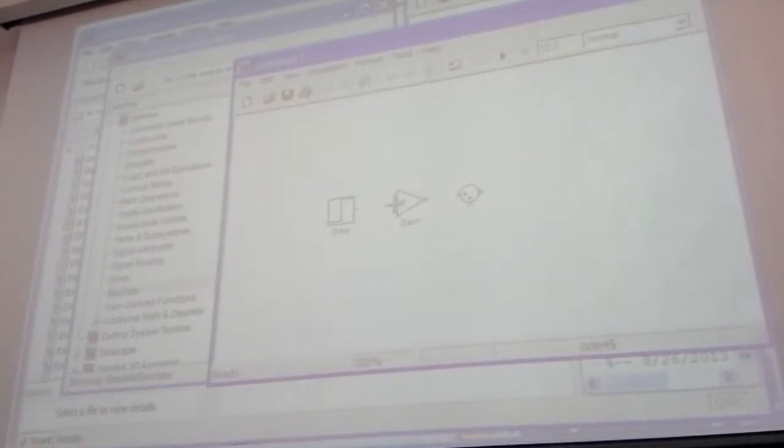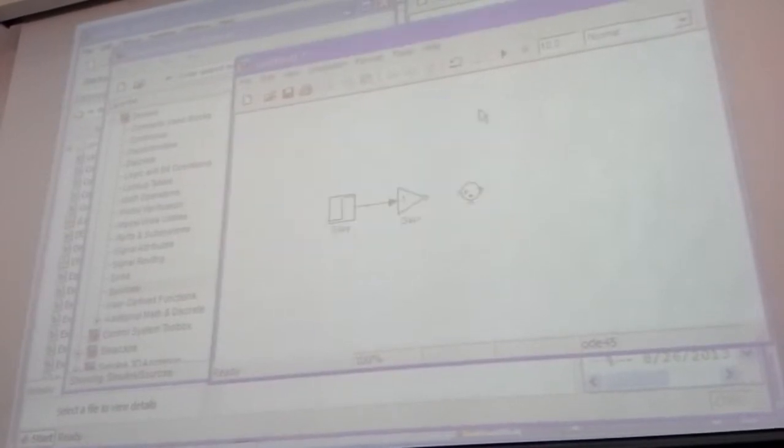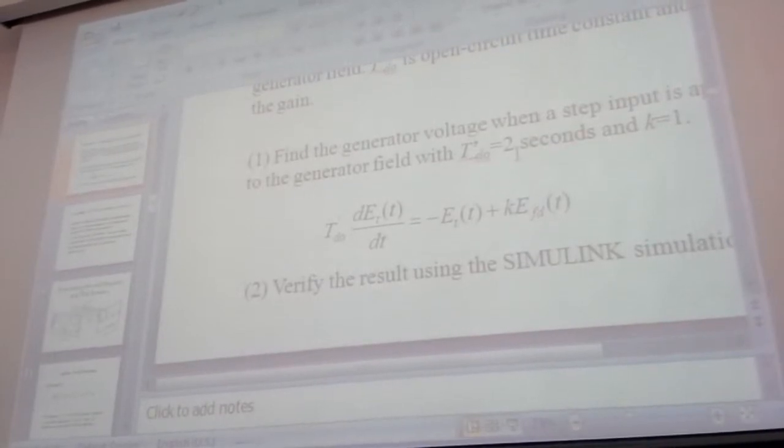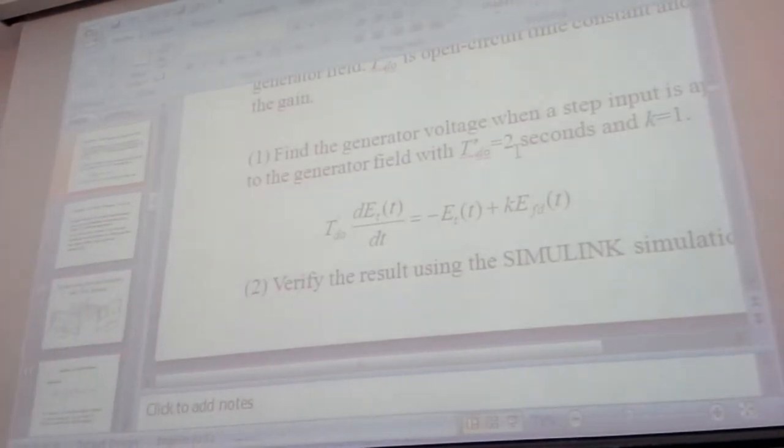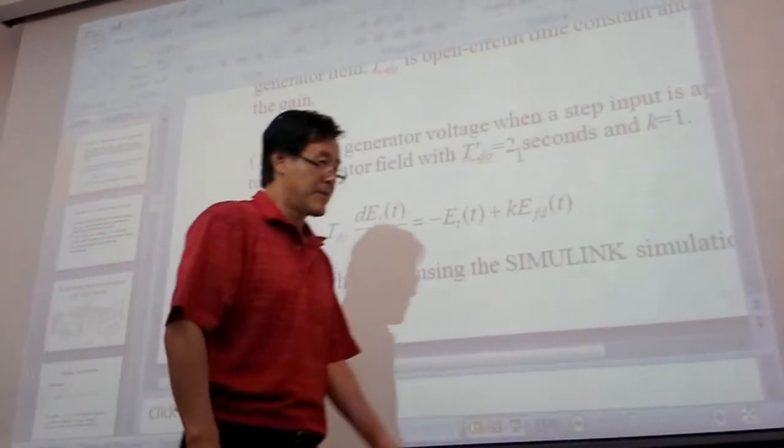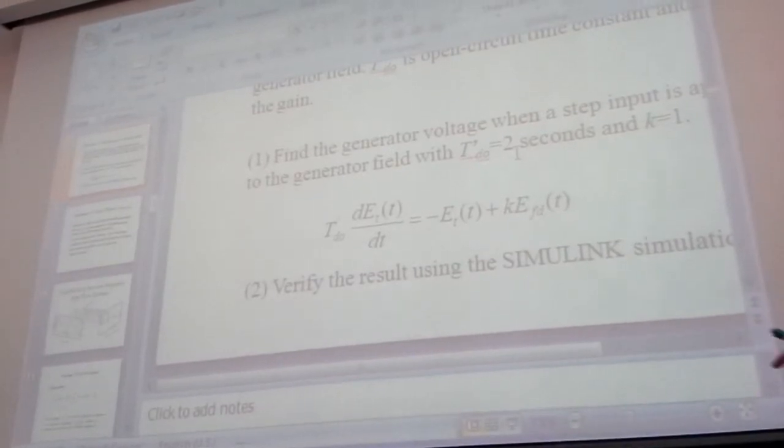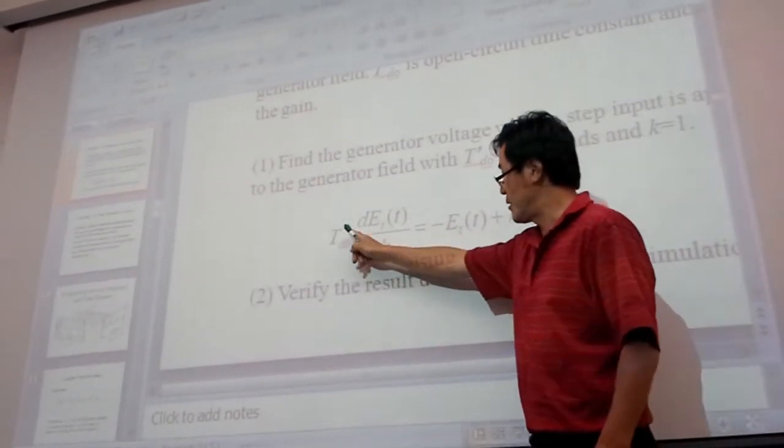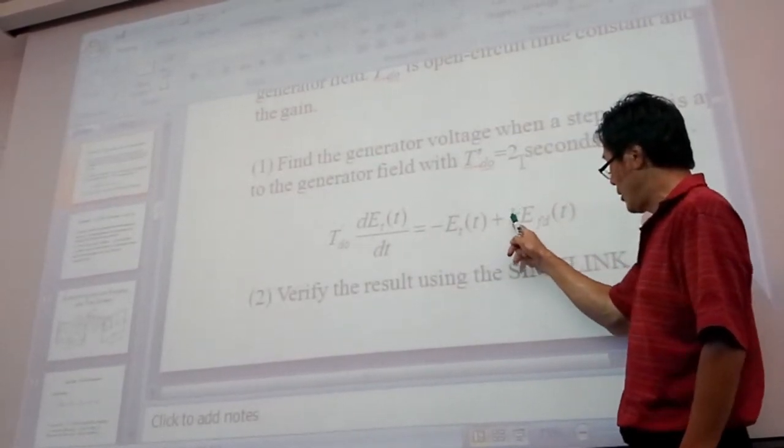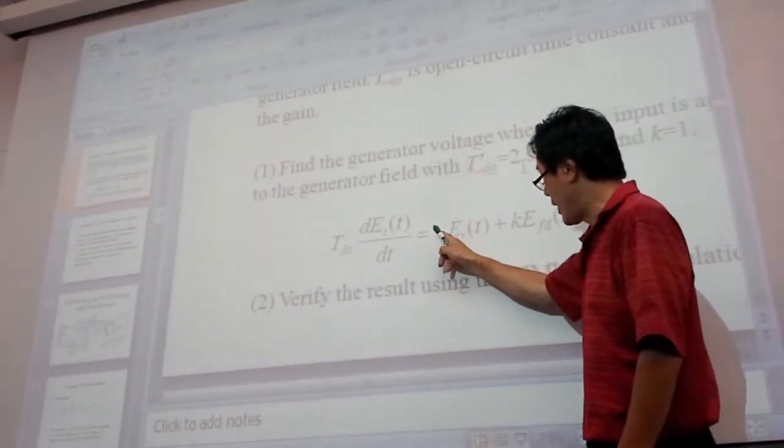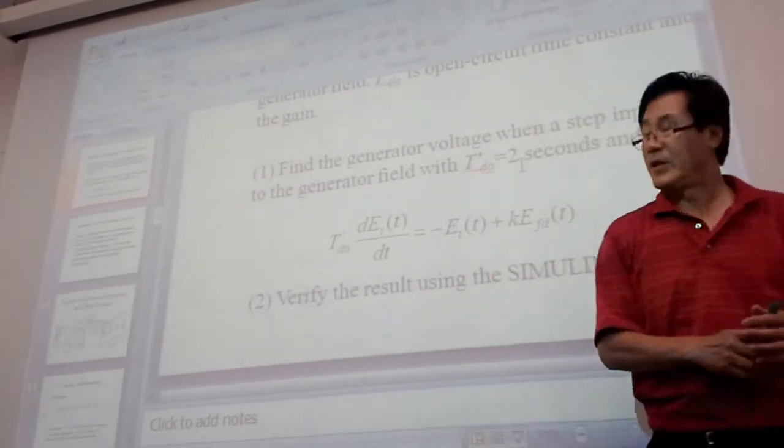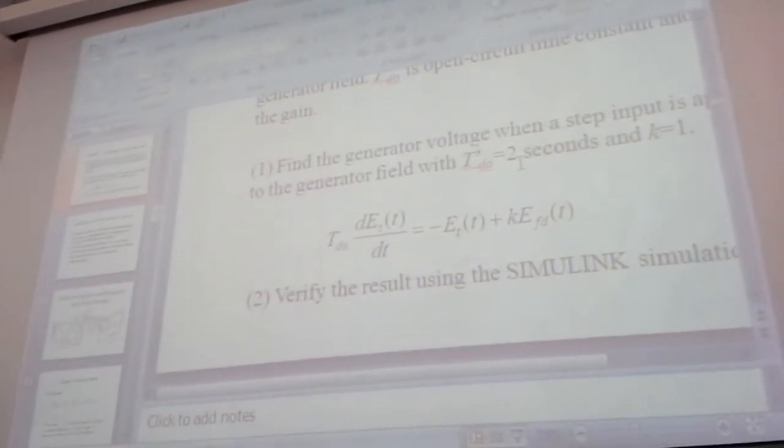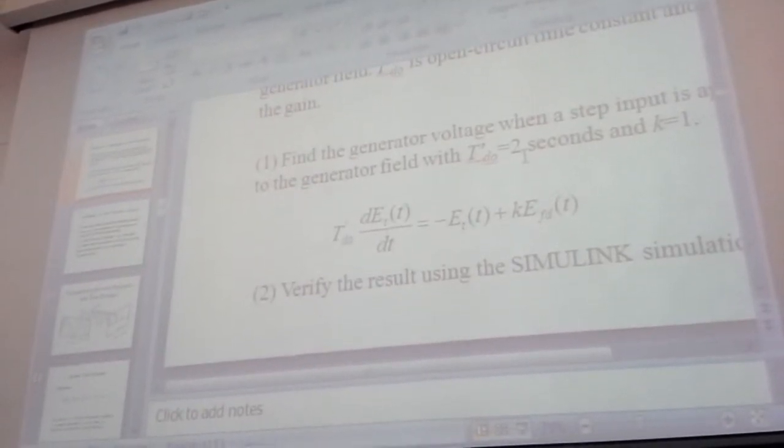So this one's step input. So what is the... T prime d0 equal 2. That means if you divide by T prime d0, this will be 1 over T prime d0, right? Both sides you divide by T prime d0. So it will be 1 over T prime d0. K over T prime d0, right? So your A will be 1 over T prime d0. So T prime d0 is 2. So minus... I'm telling you what I had. T prime d0 is space on that. One half. Half. One half.